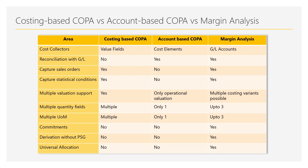One key limitation in ERP: sales order data could not be recorded in account-based COPA, whereas costing-based COPA could capture sales order details in the profitability segment. In margin analysis, this functionality is now supported. Similarly, statistical conditions on billing documents or sales orders — used to record certain values without posting — can now be linked to the profitability segment in margin analysis, which was only possible in costing-based COPA in ERP days.